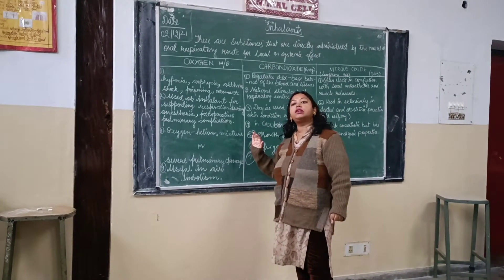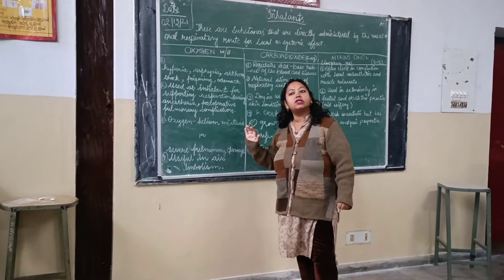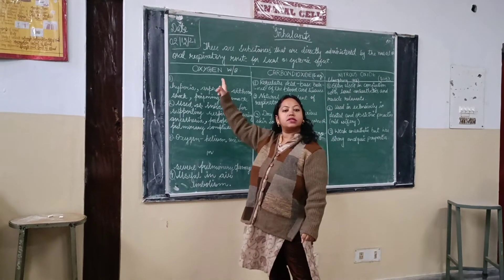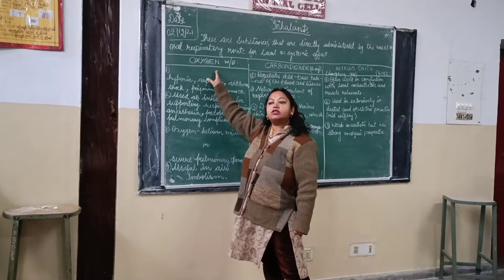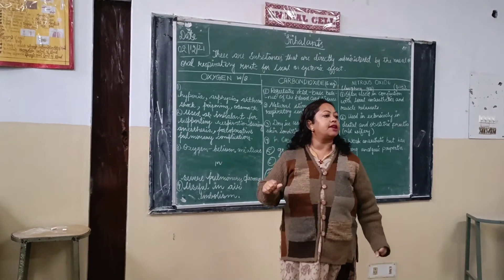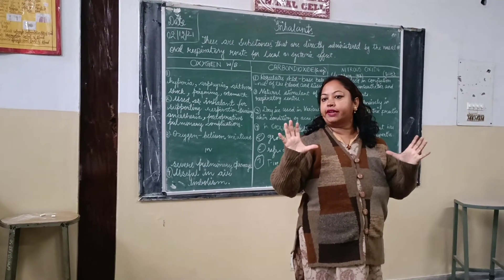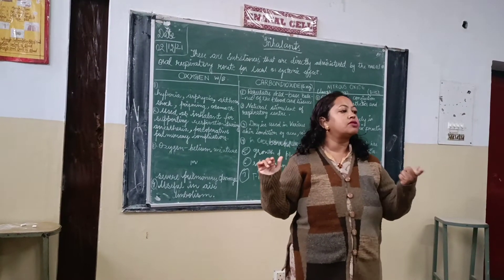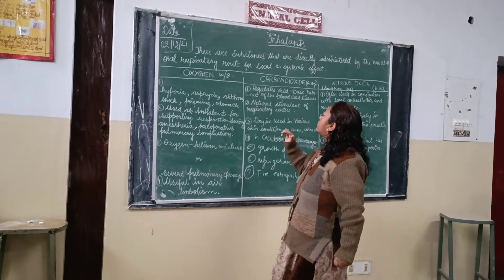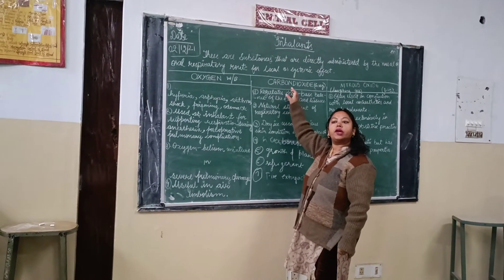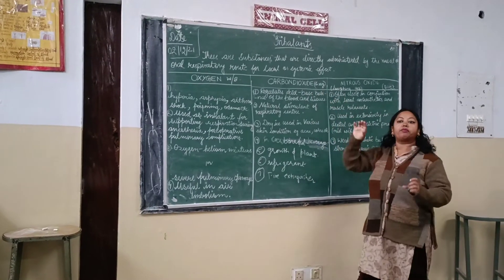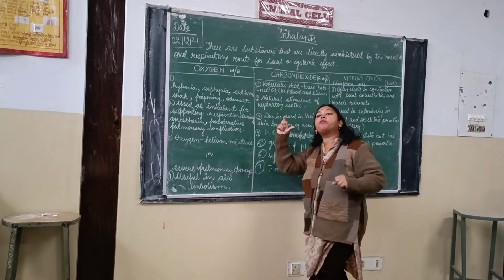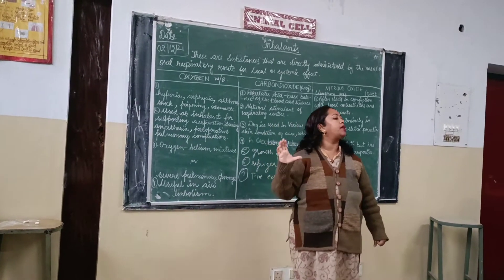It is very well mentioned in your syllabus that the storage conditions of these inhalants are very important for exam purposes. Oxygen is stored in a white and black coloured cylinder — the shoulder of the cylinder is white in colour and the remainder is black. Similarly, carbon dioxide is stored in a grey coloured cylinder, meaning the shoulder of the cylinder is grey in colour.